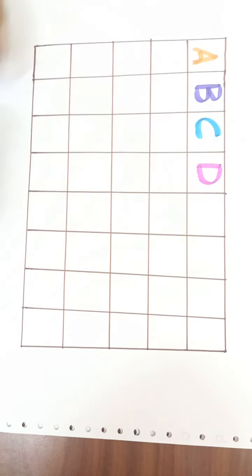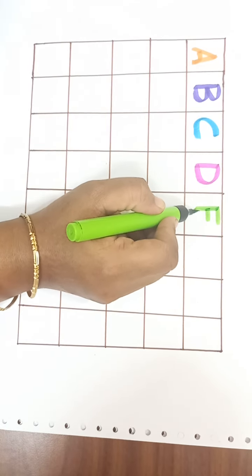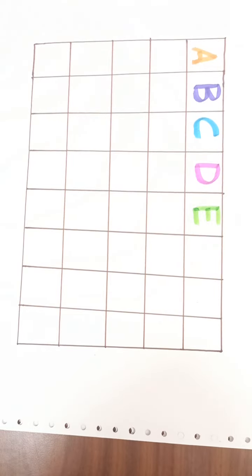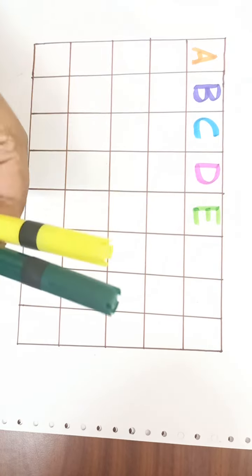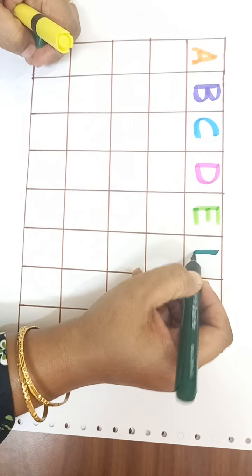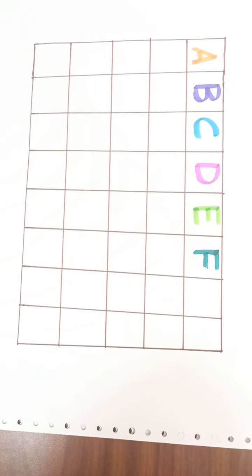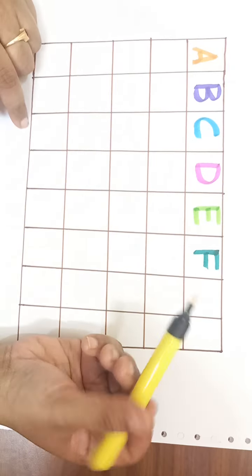Light green color. E. E for elephant. E-L-E-P-H-A-N-D, elephant. Dark green color. F. F for fish. F-I-S-H, fish.